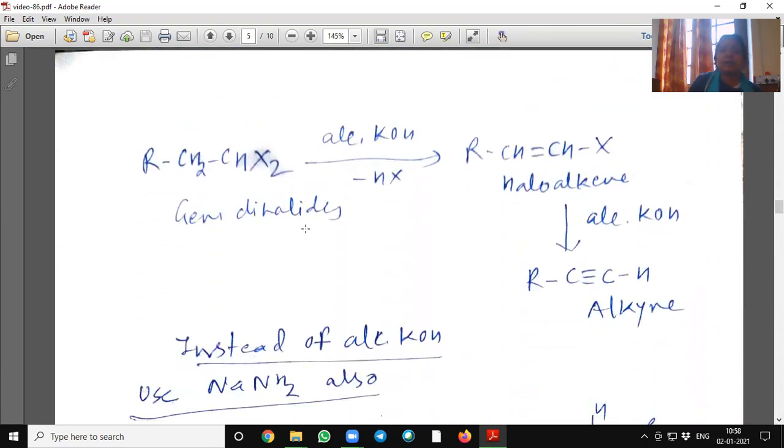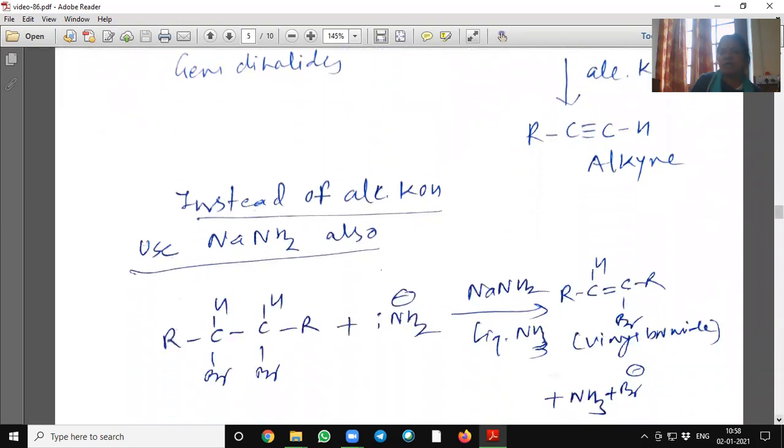See here, vicinal dihalide means one halogen. Alcoholic KOH will replace vinyl halide and then again react it with KOH. It will dehalogenate and it will give alkynes. Gem dihalide also give alkyne. See here, alcoholic KOH, dehalogenation.